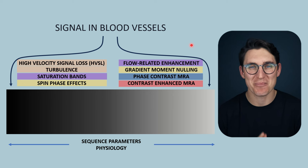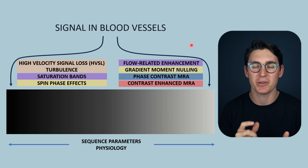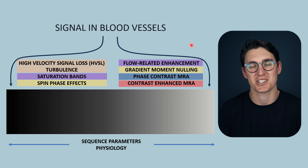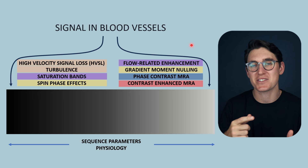Hello everybody and welcome back. We've made it to the final talk in this MRA module. Up until now, we've been looking at signal changes within blood vessels without the need for the administration of an exogenous contrast agent. Now we're going to shift our attention to contrast-enhanced MR angiography. We're going to see how giving contrast will allow us to generate more signal within blood vessels, and why we get more signal as well as the type of sequence we need in order to capture that signal.